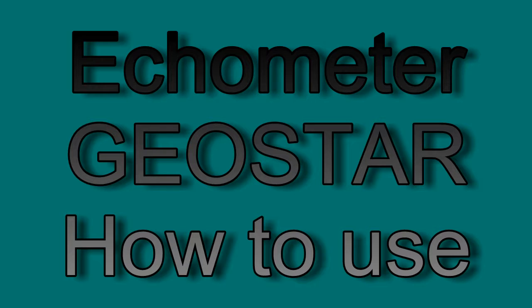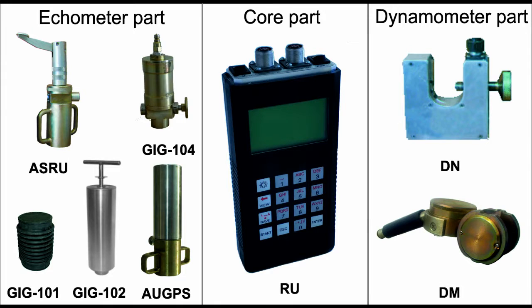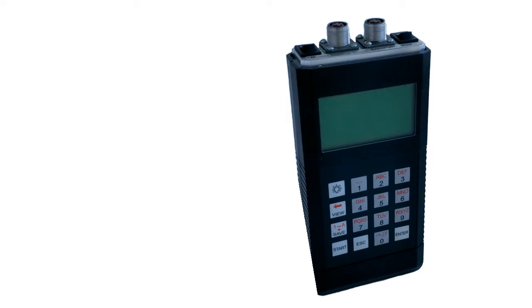System GeoStar 111 consists of dynamometer transducers, echometer transducers, gas guns, and a registration unit. The registration unit performs routines with transducers such as reading, saving, and viewing. It has a keyboard, display, and sockets.